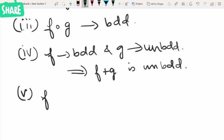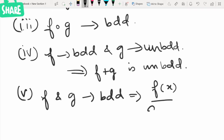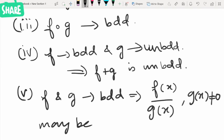Last one: if f and g are bounded, then f of x by g of x, where g of x is not equal to zero, may be bounded or may not be bounded.